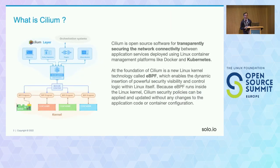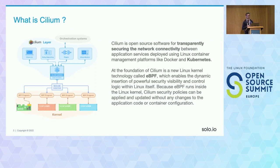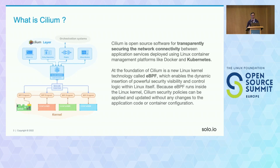What is Cilium? Cilium is an open-source software that can help you to transparently secure your network connectivity in your Kubernetes cluster. It's most commonly used as a CNI and is a popular choice. At its foundation, Cilium uses eBPF, a relatively new technology that enables better performance at the kernel level without recompiling the Linux kernel. On top of that, Cilium creates security policies you can apply without any changes to the application code, enabling a multi-layered security posture.